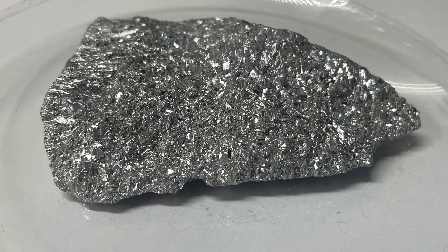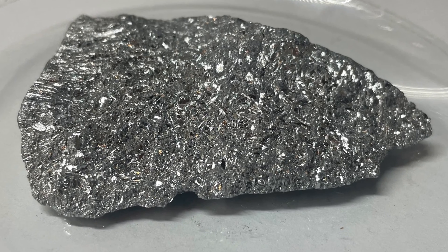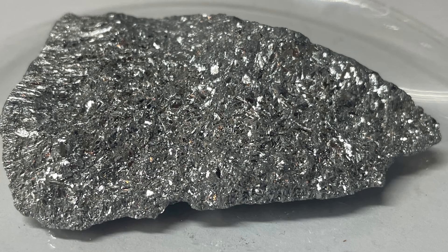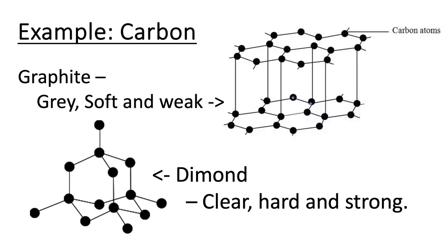You probably don't know much about the metal antimony. To start, it has many exciting allotropes. An allotrope is a different structural form of the same element, exhibiting distinct properties due to this variation in arrangement of atoms. By tweaking the arrangement of atoms in the structure, we can get wild properties.